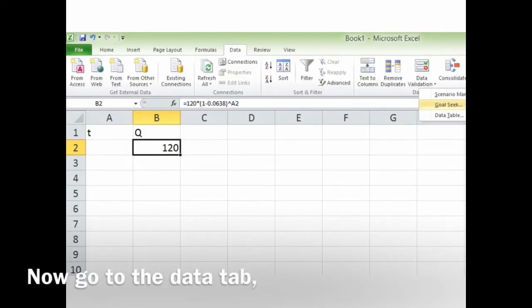Now go to the data tab, and go to what if analysis, and choose goal seek.